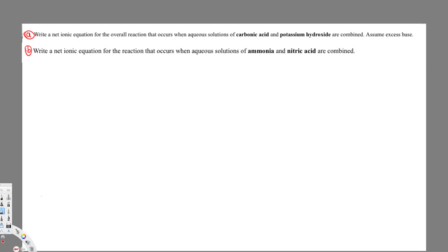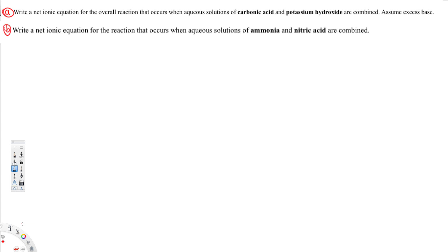Let's do this problem. We have two questions. The first question is asking us to write a net ionic equation for the overall reaction that occurs when aqueous solutions of carbonic acid and potassium hydroxide are combined. Assume excess base. Let's see how we can do this.